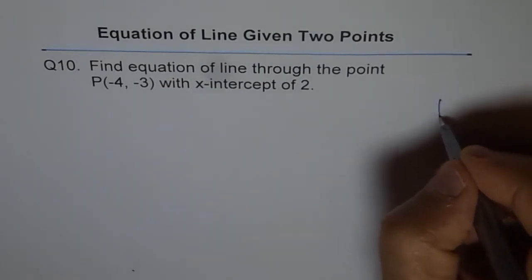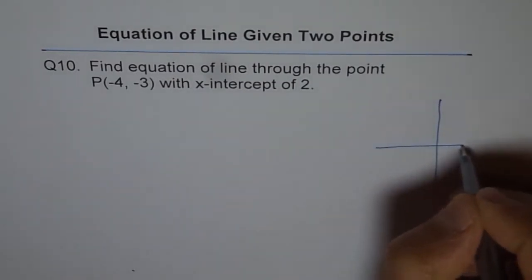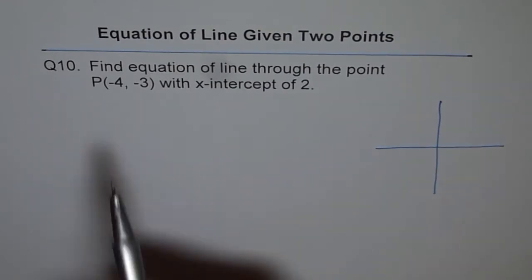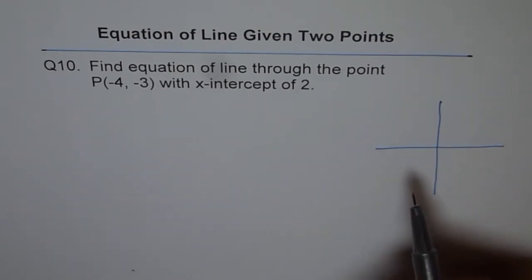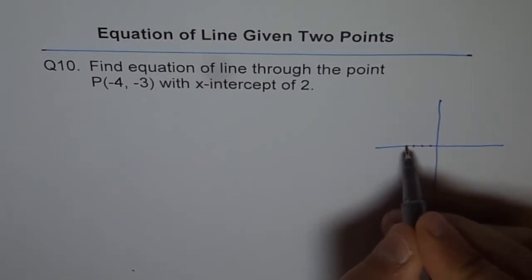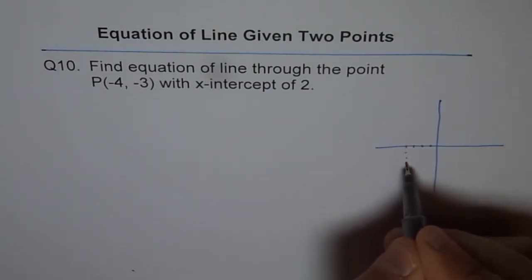So here is our coordinate plane. Now, let's try to locate where the points are. Point P is (-4, -3). That means 1, 2, 3, 4. Minus 4. Minus 3. 1, 2, 3. There we are.